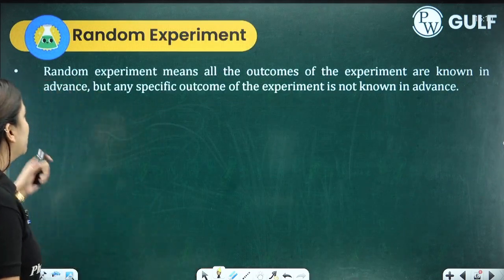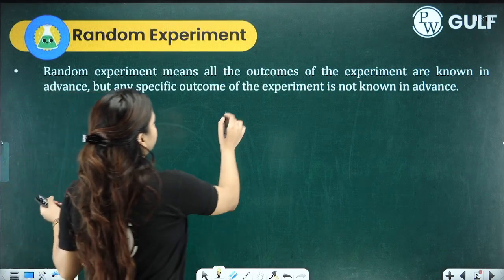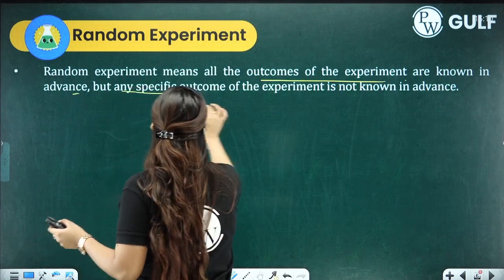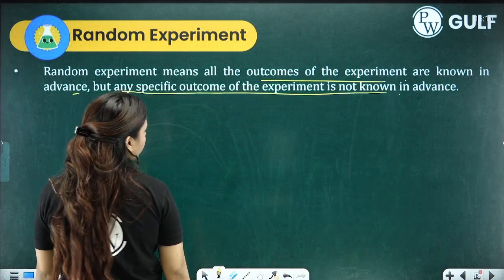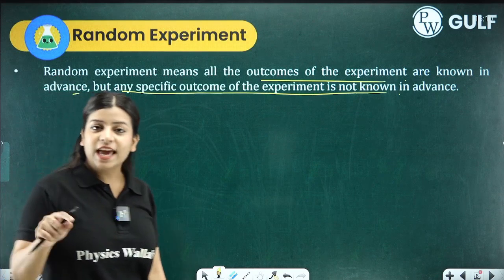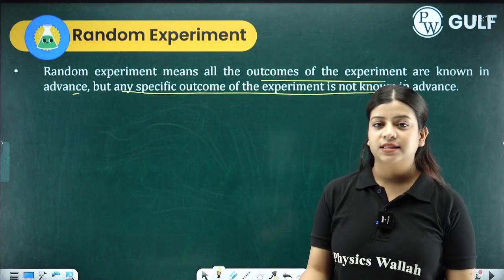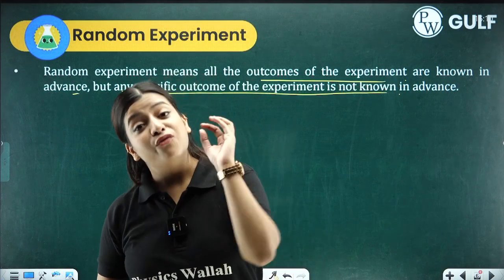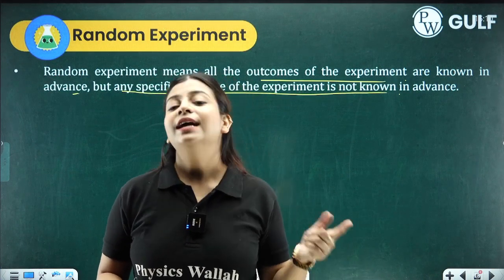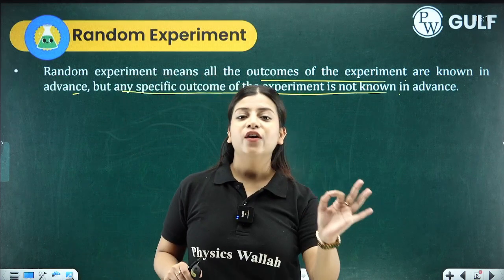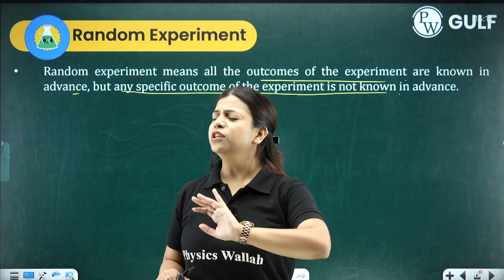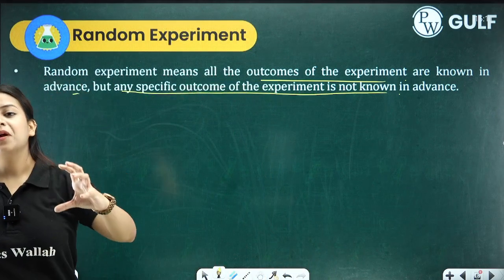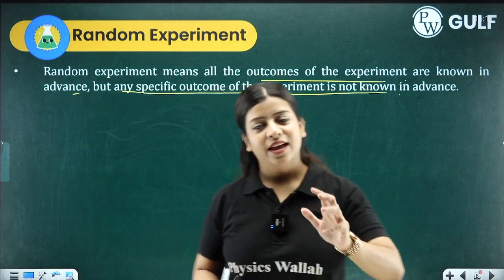The next thing we have is random experiment. Random experiment means all the outcomes of the experiment are known in advance, but any specific outcome of the experiment is not known — same in the case of coin, same in the case of dice. We know all the outcomes, but which specific outcome will come is something we are not sure of. Either a head or a tail can come; I'm not sure only tail will come. This is what is known as a random experiment.